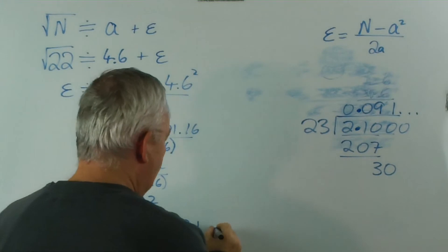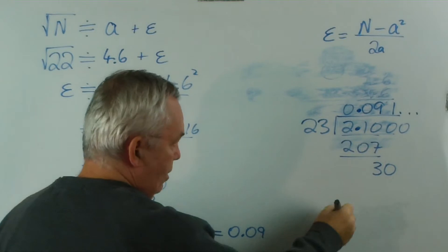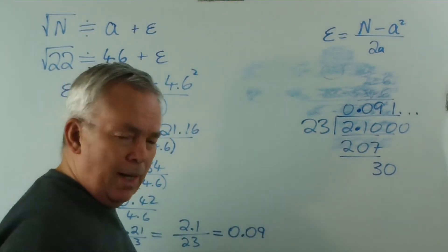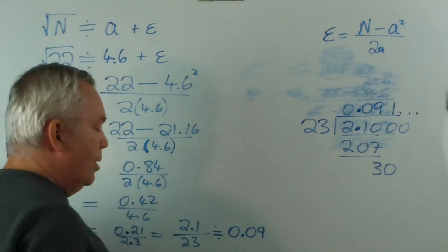Bring down the zero and you can see 23 into 30 goes 1 and a bit more and we would continue on. So this is our approximation. Epsilon: 0.09 etc. And again, if you're going to round, it's worth rounding down. So I'm going to say it's approximately 0.09.